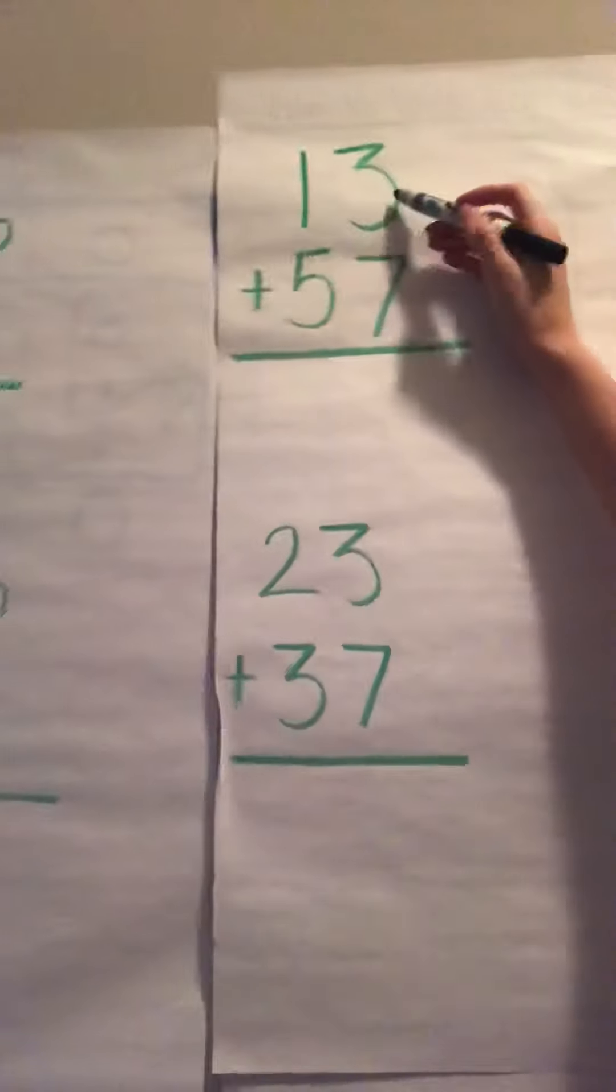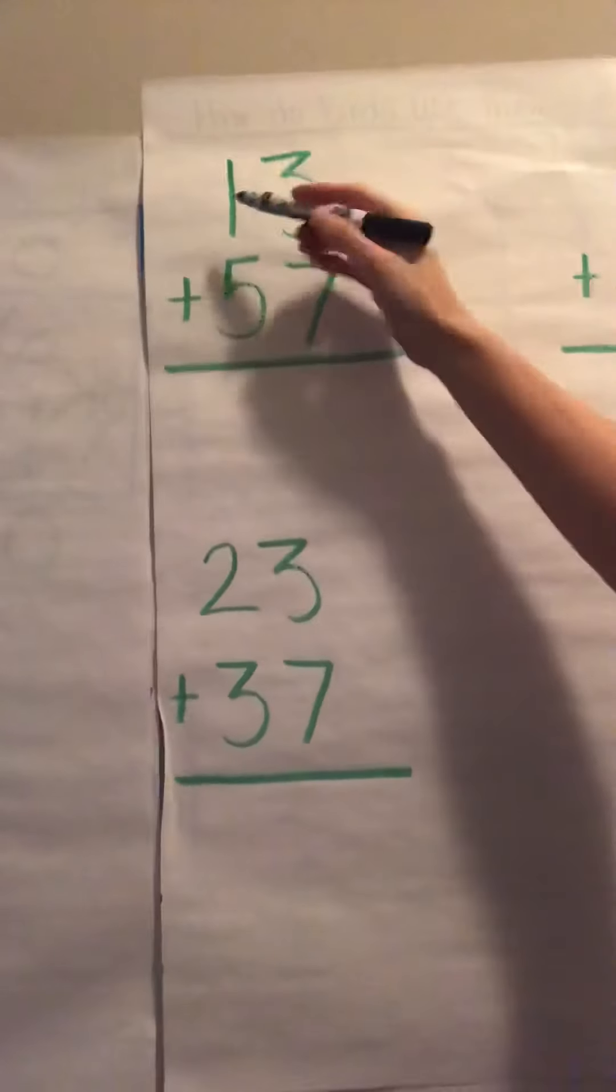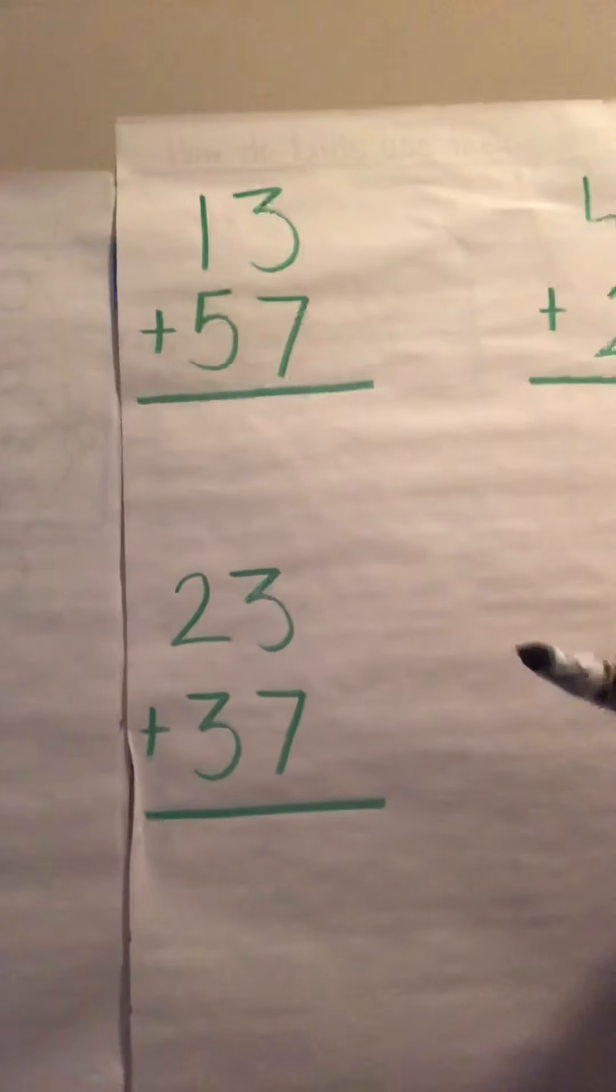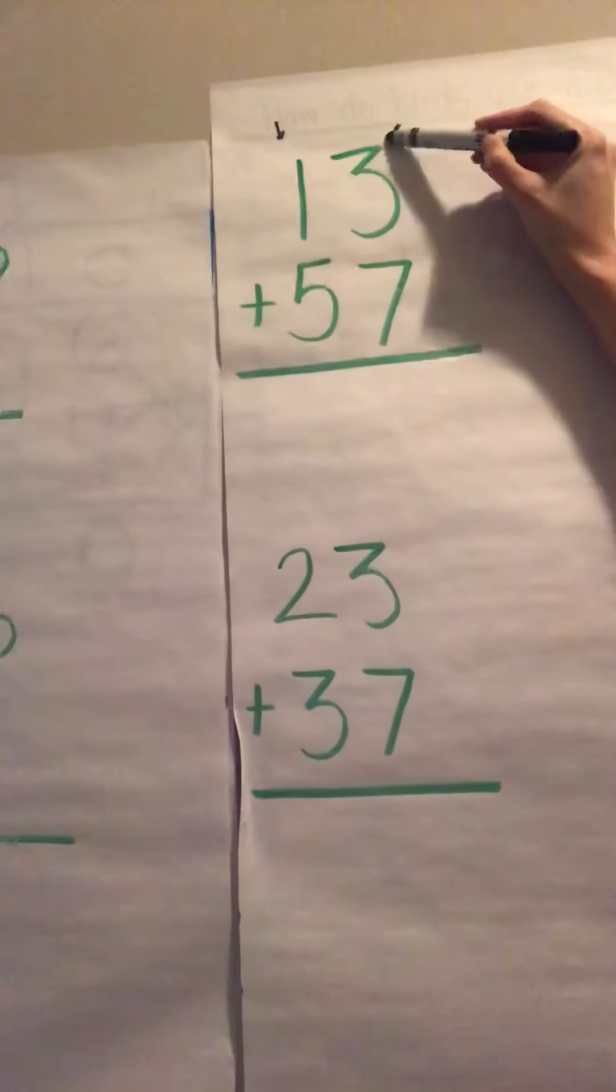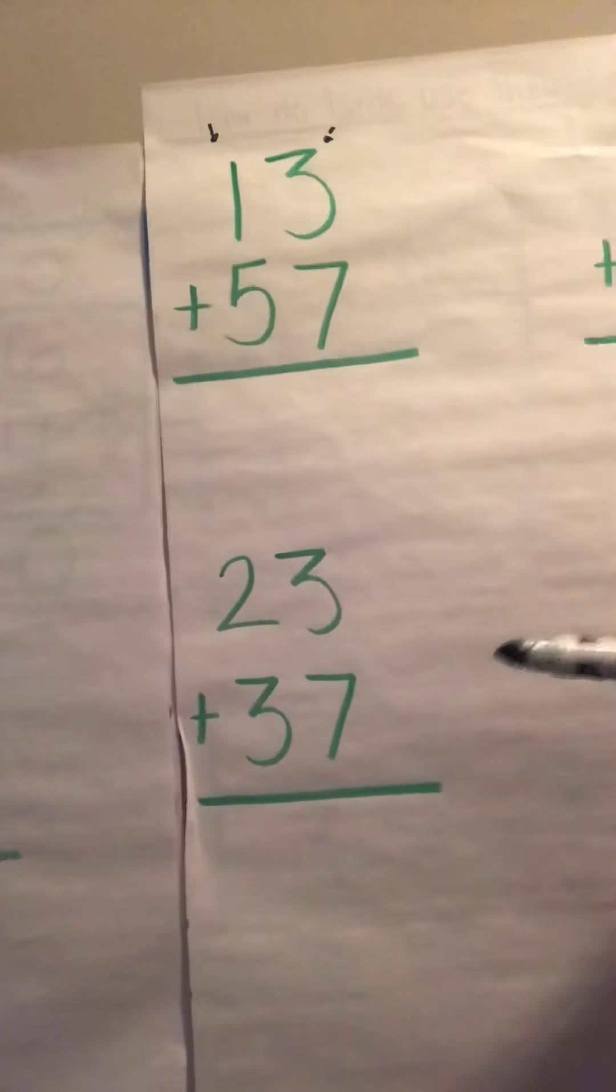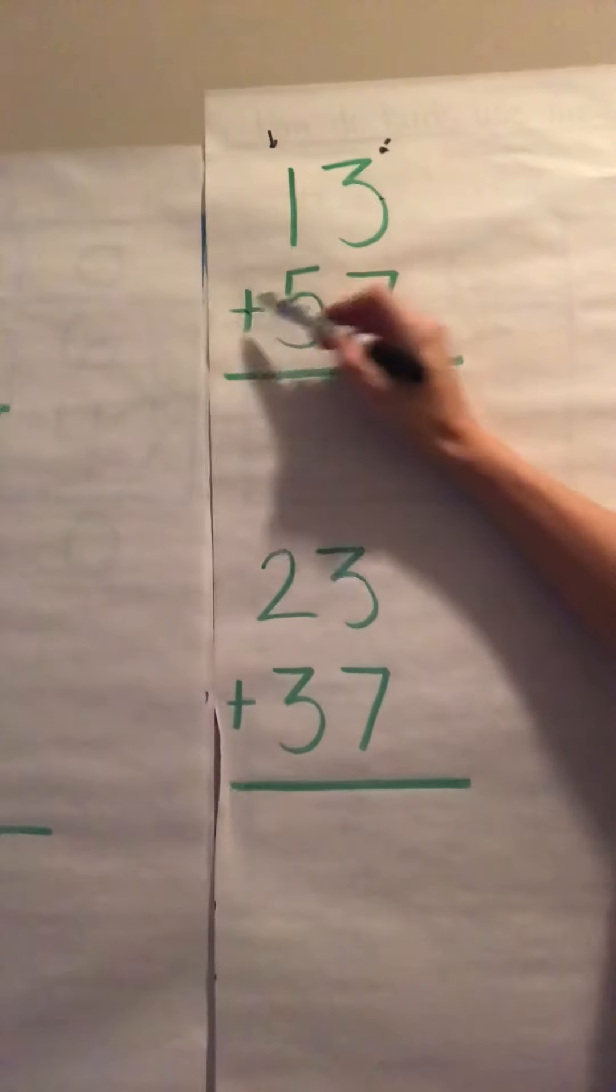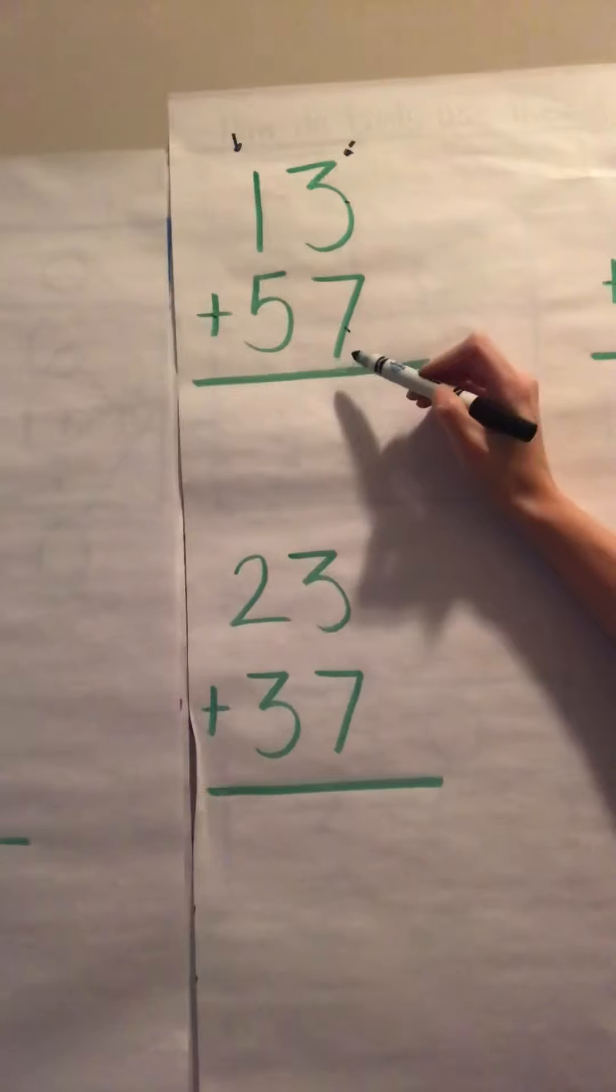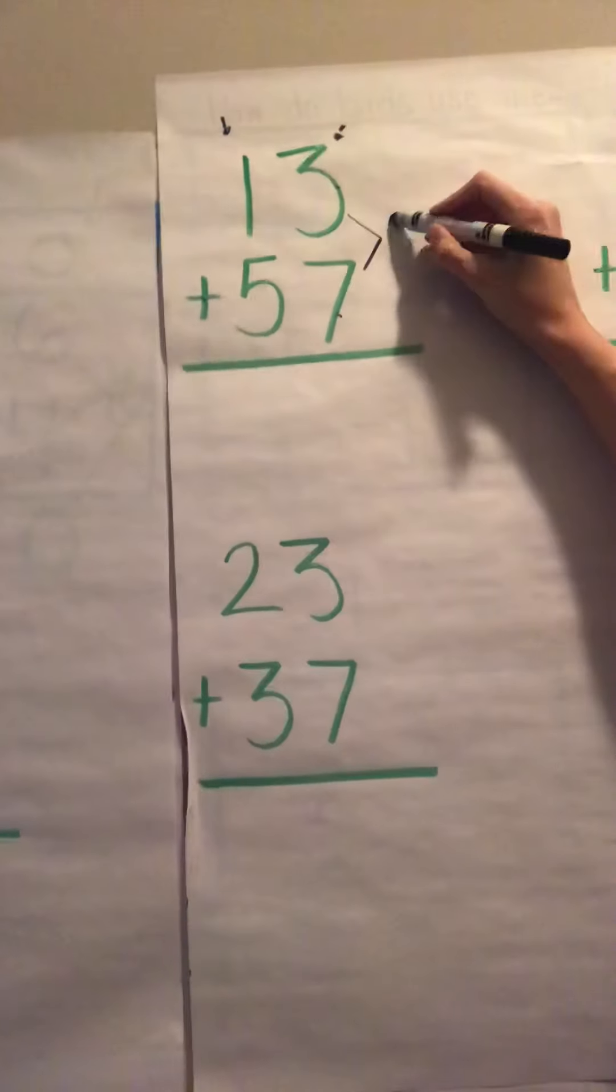So we have 13 plus 57, and when we're adding two-digit numbers, where do we start? On the left or the right? Right, we start on the right in the ones place. So we have 3 plus 7 which equals what? Right, this equals our 10.